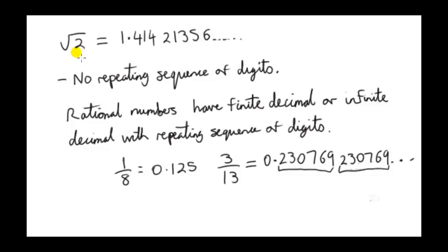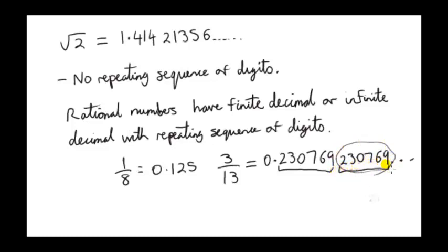A fact about irrational numbers is that we have no repeating sequence of digits in the decimal expansion. The decimal expansion goes on forever but has no repetition. On the other hand, rational numbers have either a finite decimal — like the number 1/8, for example — or, if it's not finite, like the rational number 3/13, we can see a pattern. After the first six decimal places, the decimal expansion repeats itself, giving us 230769 and another 230769, and so on indefinitely.